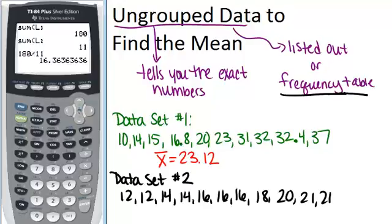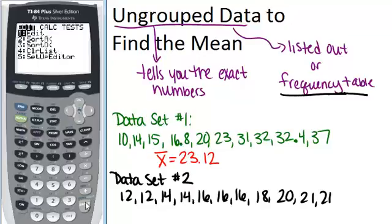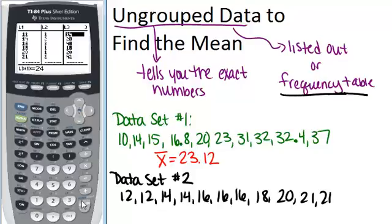Now there was one other way that we could have done this without having to create that 3rd list. So if we go back into our list, we can see list 1 and list 2, there is a way to figure out the average just given list 1 and list 2 in the frequency table way like this.